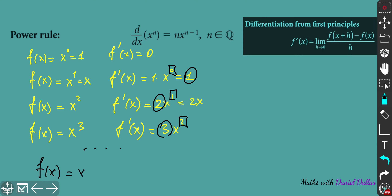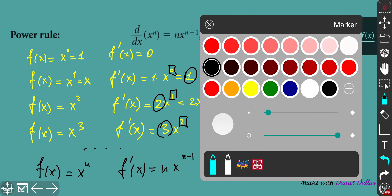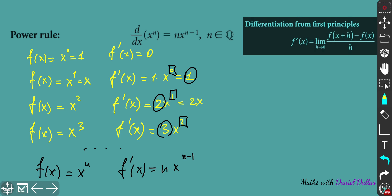The general form of the function is f(x) equals x to the power of n. If you try to take the derivative, you'll get a specific structure: the power n goes before, and x will take the power one less than the previous one. So the general rule is n times x to the power n minus one.